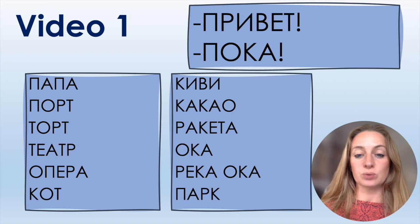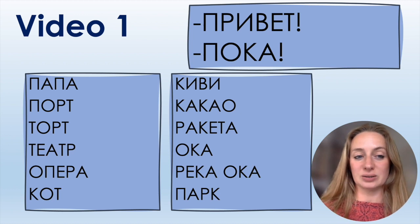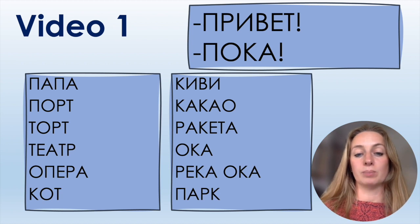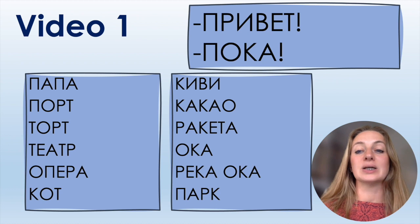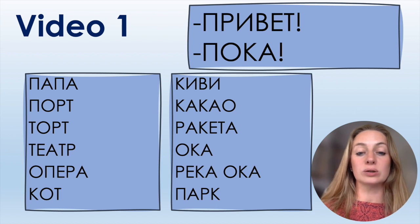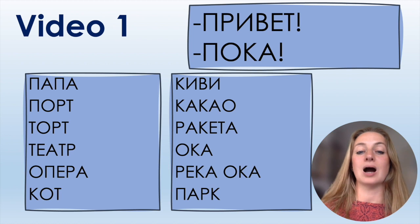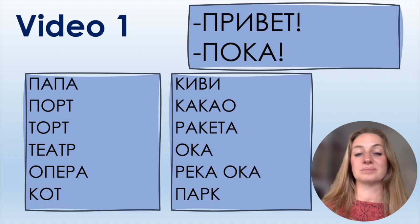Now let's read all the words from video number one one more time. When you pronounce words, you remember everything better — it's a different way to memorize and learn. Папа. Порт. Торт. Театр. Опера. Кот. Киви. Какао. Ракета. Ока. Река. Парк.